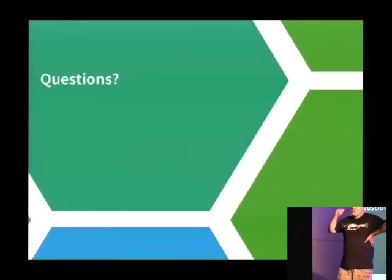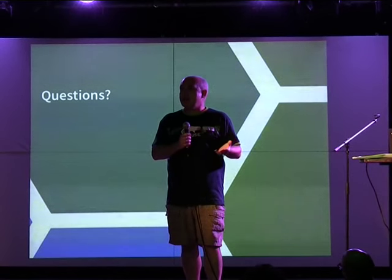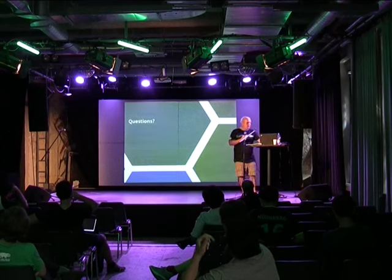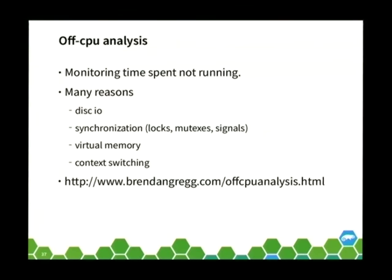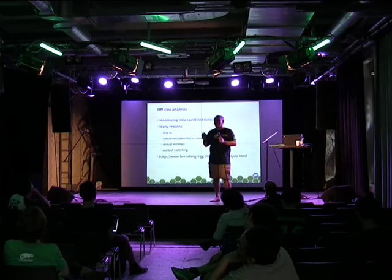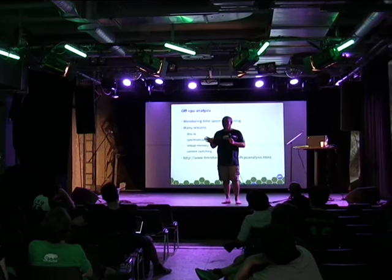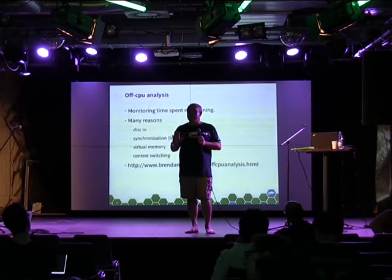The perf trace points, for example the scheduler trace points, expose a lot of information about code that has nothing to do with it being CPU bound. I talked about using perf trace and perf inject to do off-CPU analysis similar to what you could do with SystemTap. Perf top, perf record, and perf stat are generally focused on CPU-bound code, but perf trace and that side of things has nothing to do with being CPU bound.